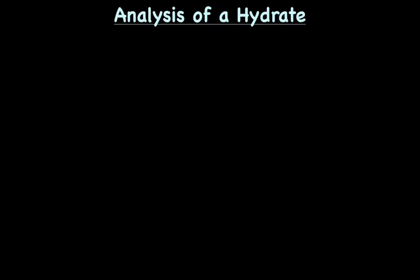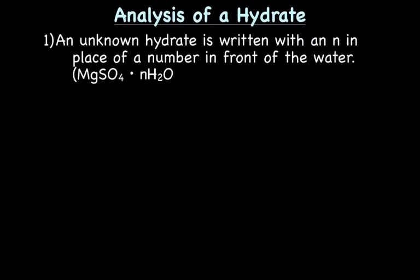On to analysis of a hydrate. So with analysis, an unknown hydrate is written with an N in place of a number in front of the water. So in an unknown hydrate, it's not that we don't know the molecule. We don't know how many water molecules are attached. So here's this N I was talking about. So we have magnesium sulfate something hydrate. We don't know how many waters are attached, and that's the point of analysis of a hydrate.